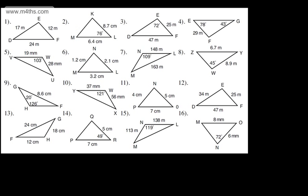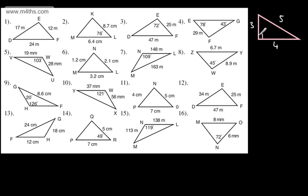Let's just recap Pythagoras theorem. Pythagoras theorem says that we can find a missing length in a right-angle triangle if we have two known sides. So if we have this one, let's say that's 3 and this one is 4. 3 squared plus 4 squared, square rooted, gave us 5. We will still use Pythagoras theorem for right-angle triangles when we have two known sides and we need to find the third.